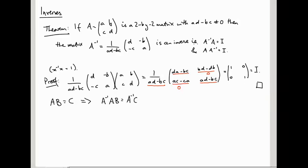And now A inverse A is the identity, so this is identity times B, but that's just B. So we get B is A inverse C.